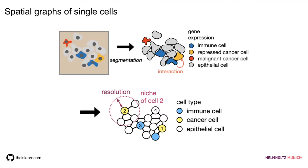We took this spatial transcriptomic graph and said that within a certain resolution — a certain radius of one particular cell — we assume interactions are happening. This can be either a predefined radius plausible for the cell types present in the dataset, or you can investigate these interaction resolutions and find the best interaction distance. Within this niche, we assume that all cells are connected and there is a dependency between these niches of cells.